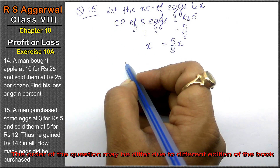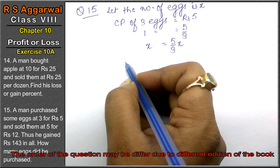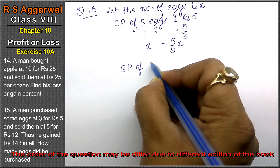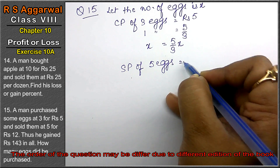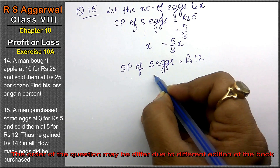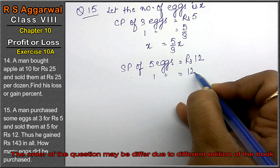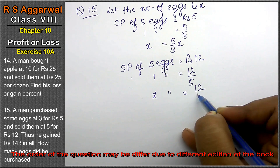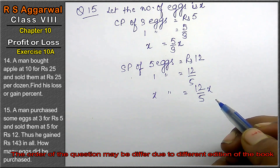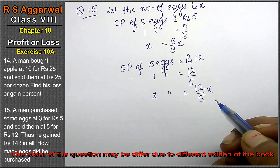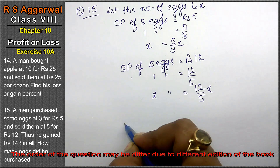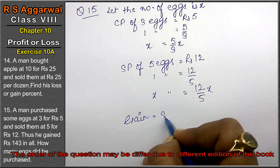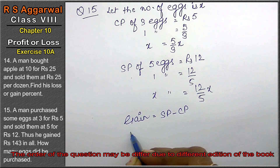He sold them at 5 for rupees 12. So SP of 5x equals 12, meaning SP of x eggs = 12x upon 5. He gained rupees 143 in all. Gain formula is SP minus CP.